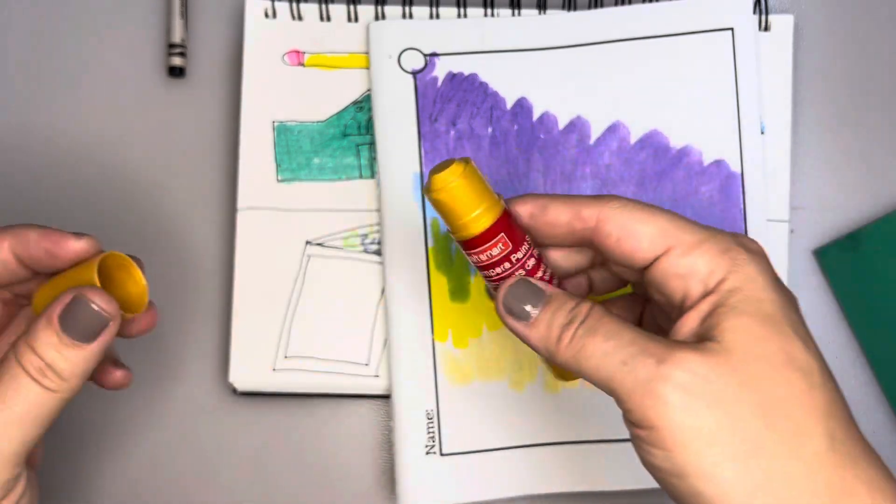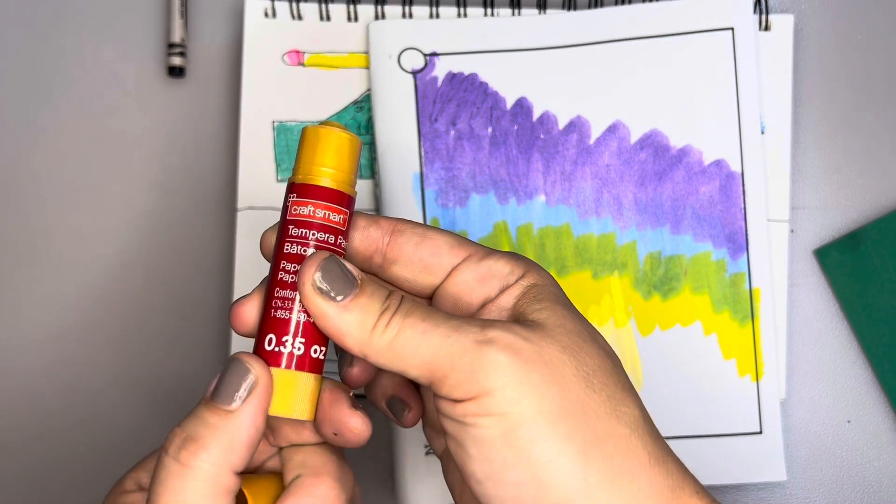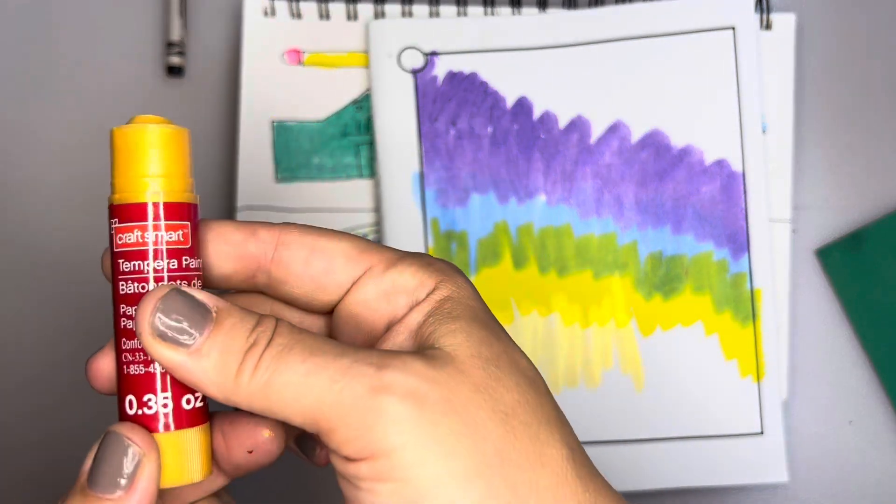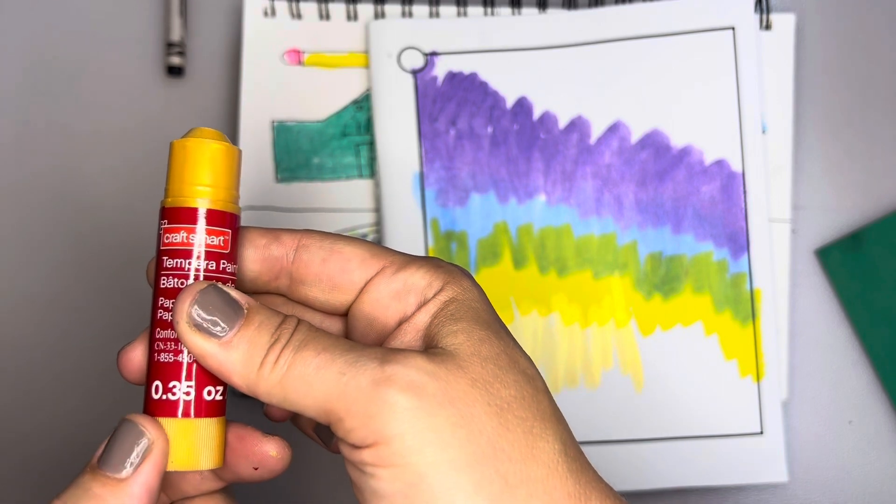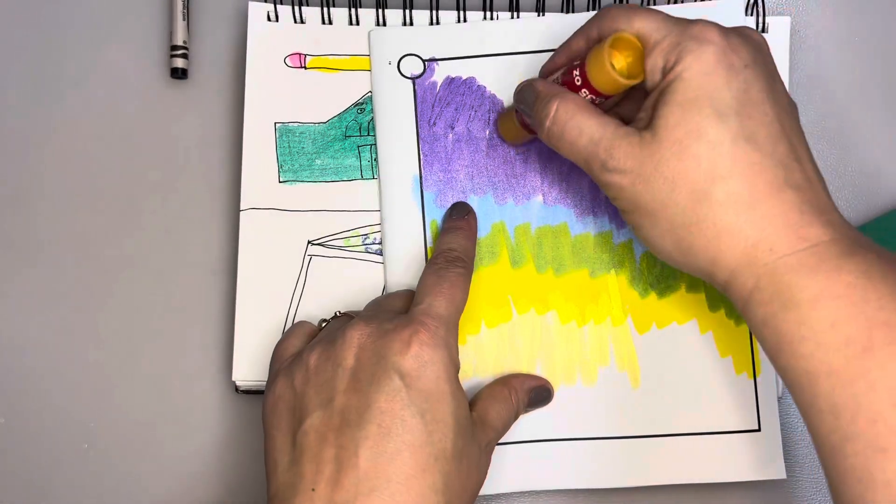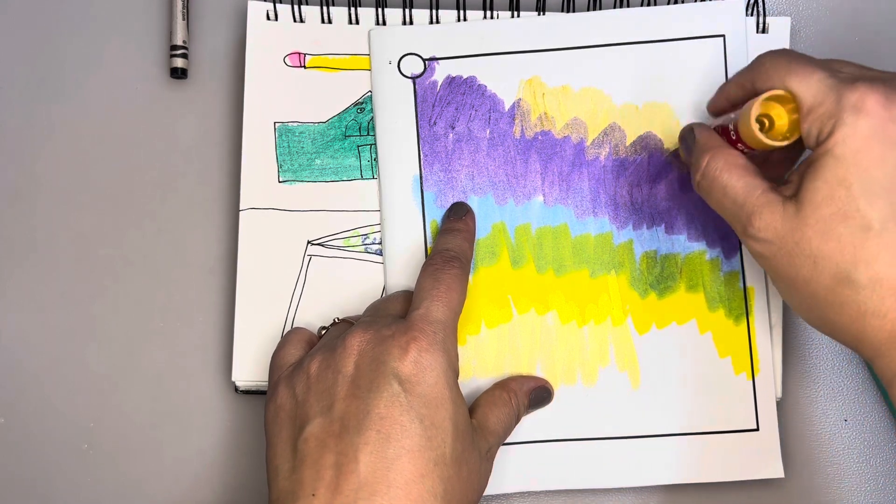So I took the lid off. I can turn the bottom so that a little bit peeks out, just a little bit. We never want to make it peek all the way out or it might break. A little peeks out and then we rub a thin layer. Oh, this one's gold.